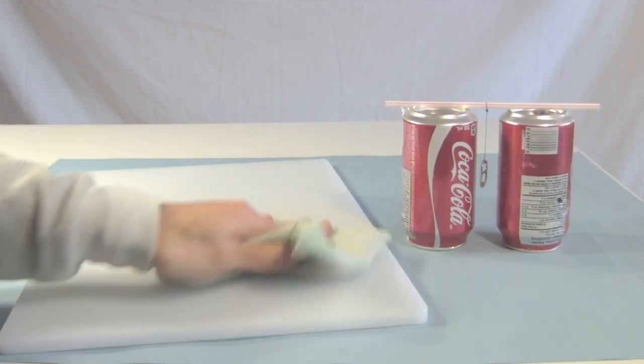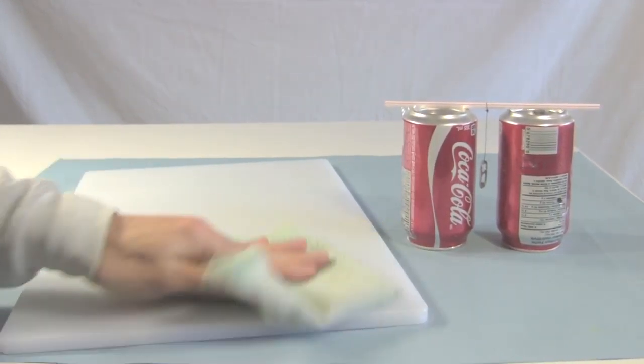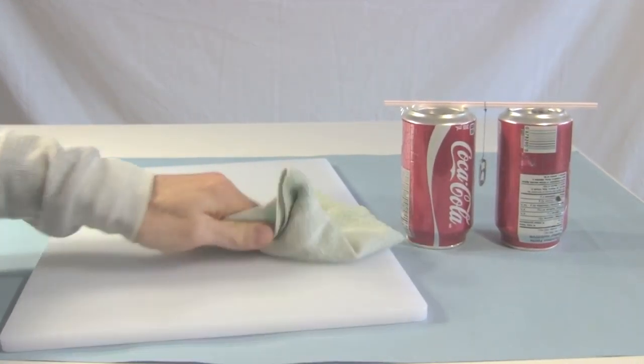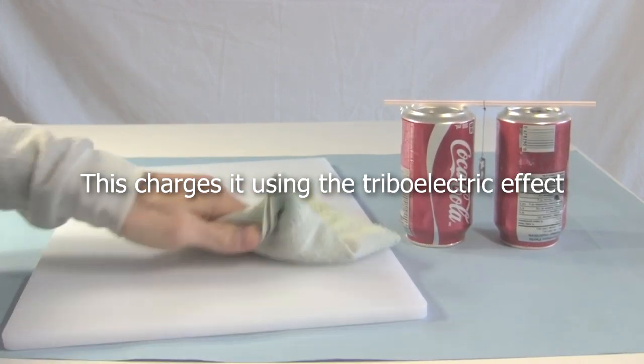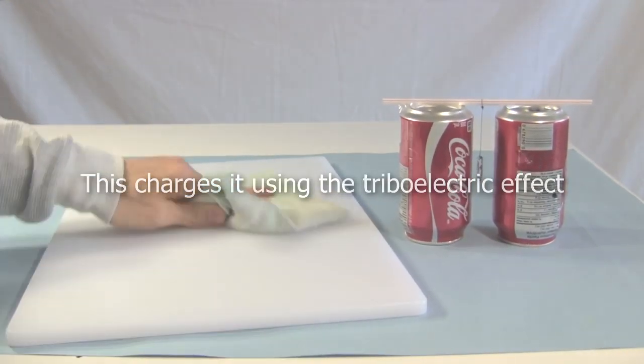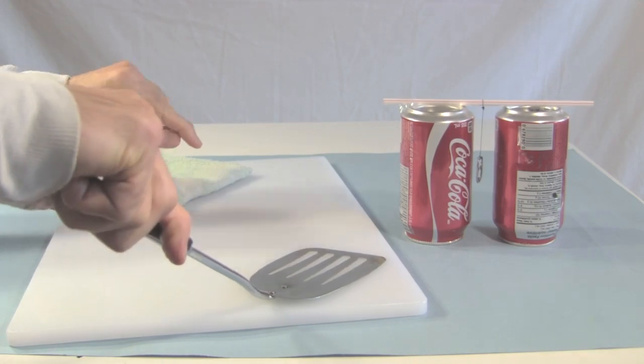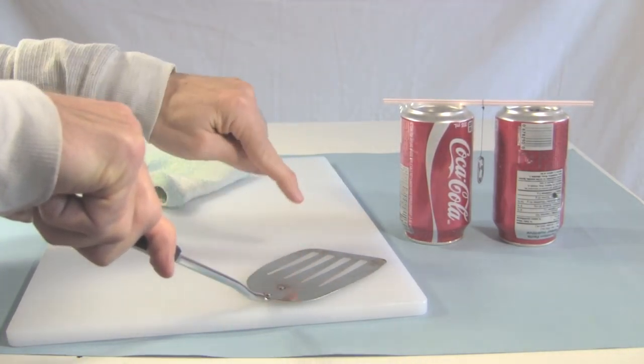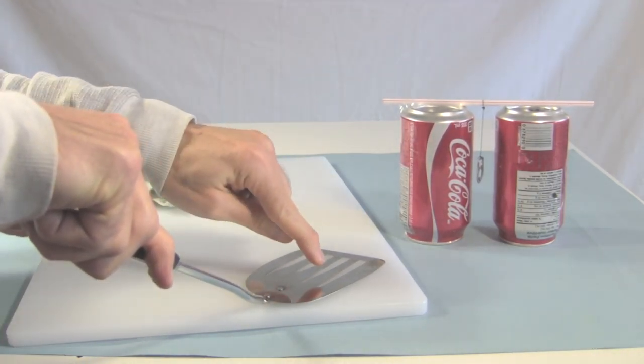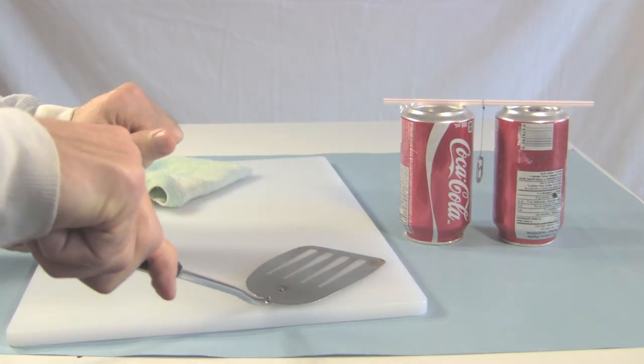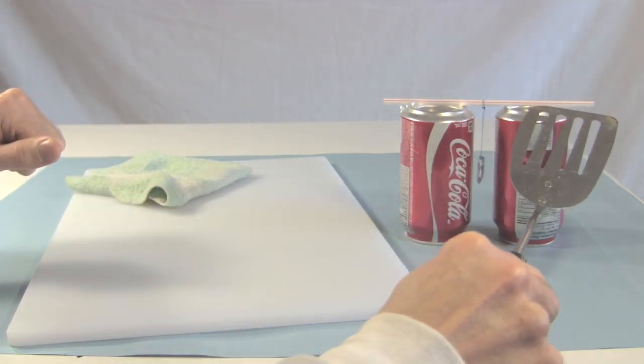Rub the plastic vigorously with the face cloth. That charges the plastic. Then hold the spatula down firmly so it makes a lot of surface contact with the plastic. And touch with your finger, you'll get a little shock. Then touch the spatula on the can.